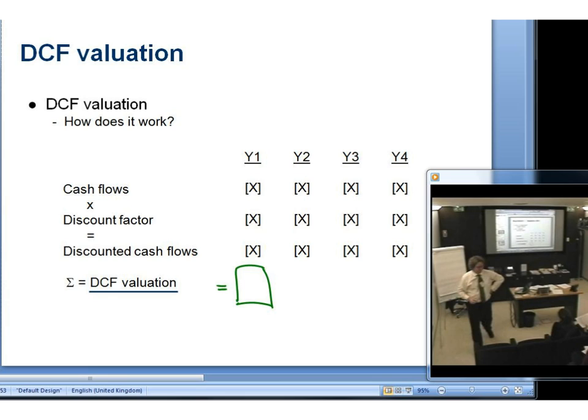So what happens is we discount these cash flows more the further out we are. That's kind of all you need to know. It's a valuation methodology. We do a whole separate course on this. So you're really getting the condensed version. We project the cash flows, we discount those ones the most, we total them up, and that tells us what our valuation is.